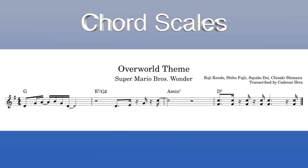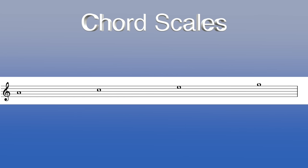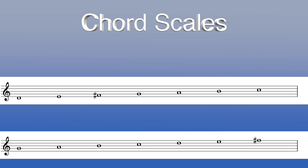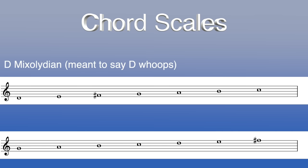Let's look at A minor 7. Here we have the four chord tones, and we fill in the gaps with the diatonic notes of the G major scale — since even though the chord is A minor, we're still in the key of G major. That gives us the A Dorian scale, a kind of vaguely minor-flavored scale. Moving on to D7, filling in the gaps using the notes of the G major scale gives us the G Mixolydian scale — a bluesy, major-ish scale.